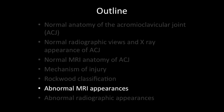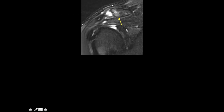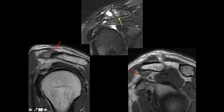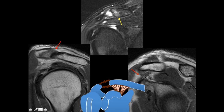In this first abnormal case, there is distal clavicular edema and some edema along the AC ligament, but the ligament does not appear torn. The superior ligament appears more injured or sprained than the inferior one. On the sagittal image the coracoclavicular ligament is intact — you can even appreciate the fat between the two components. This is a sprained AC ligament with an intact CC ligament: Type 1.